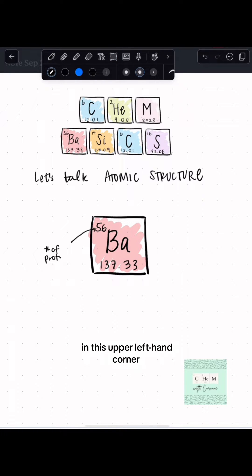This top number that you see in this upper left-hand corner, this is just looking at a box on the periodic table, is going to be your atomic number. It's going to give you the number of protons.